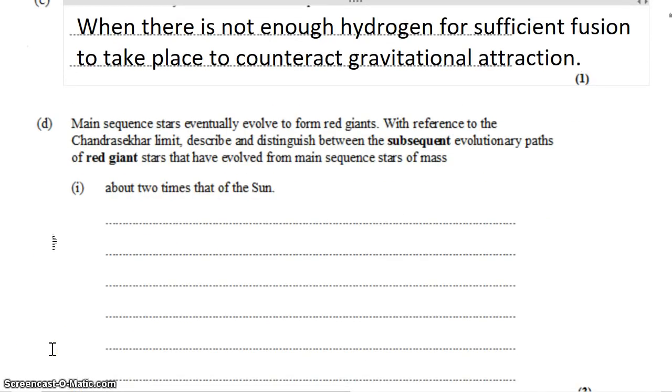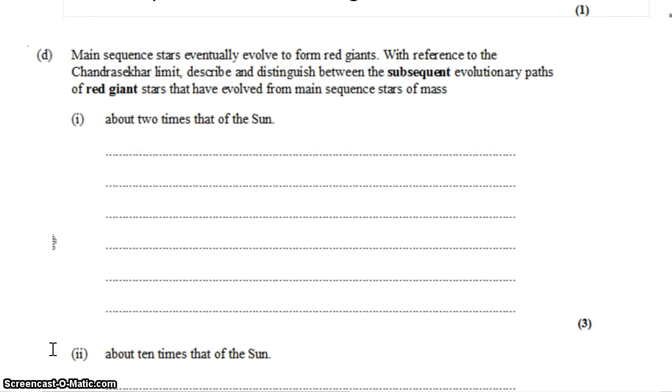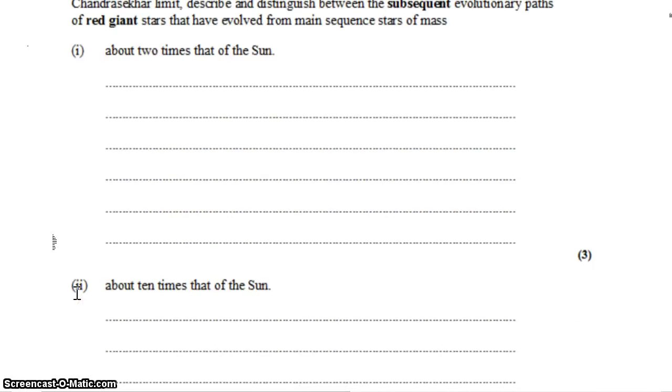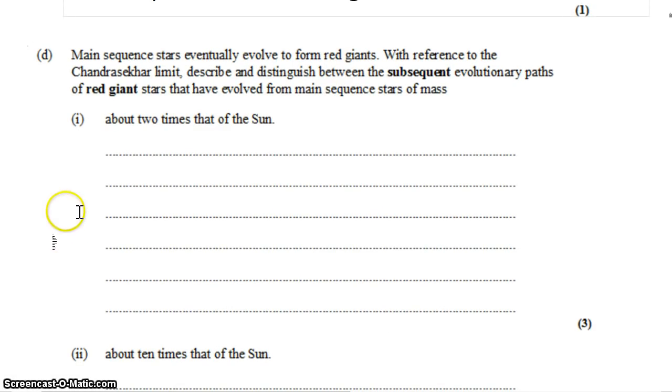So when that starts to happen, that's what part D is all about. Main sequence stars eventually evolve to form red giants. With reference to the Chandrasekhar limit, describe and distinguish between the subsequent evolutionary paths of red giant stars that have evolved from main sequence stars of mass about two